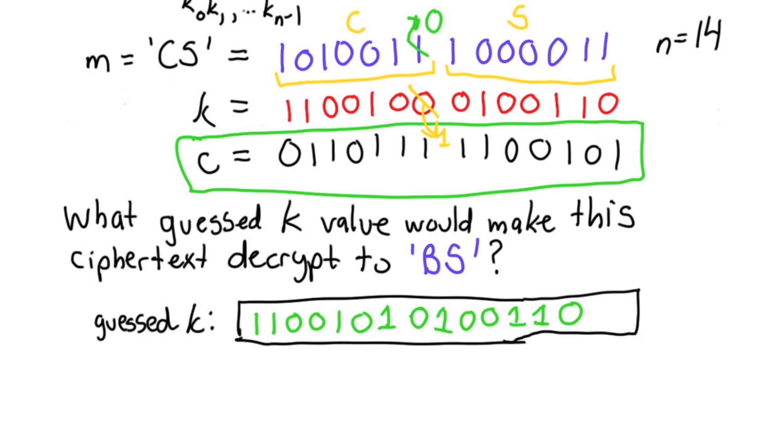If we guess this key instead of the correct key, we get what looks like a fairly reasonable message out, but it would be 1 off from the one that was there. In fact, we could get any possible message we want by guessing different keys.